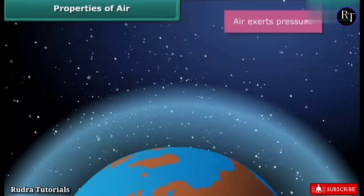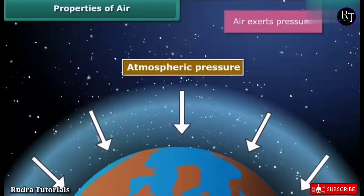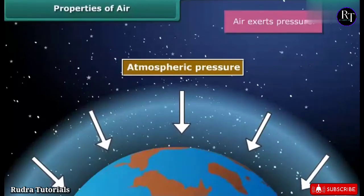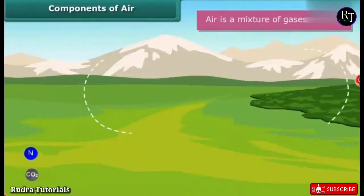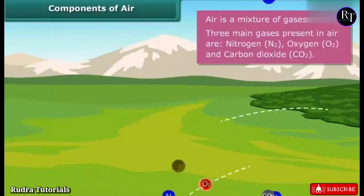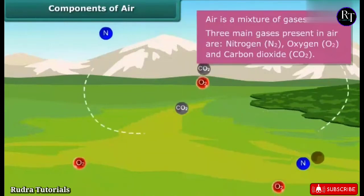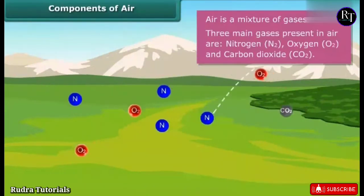Air surrounding the Earth is called the atmosphere. The pressure exerted by the atmosphere is known as atmospheric pressure. Air becomes less dense at higher altitudes; therefore, atmospheric pressure decreases as altitude increases.